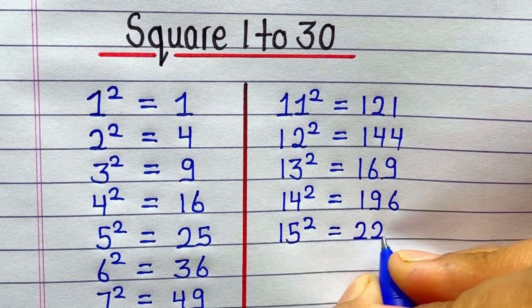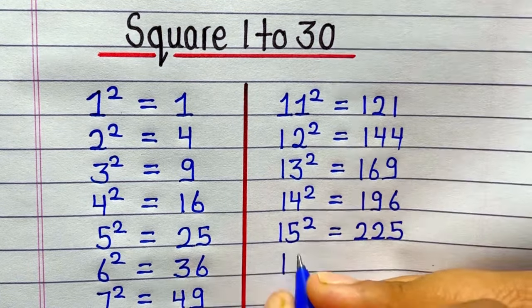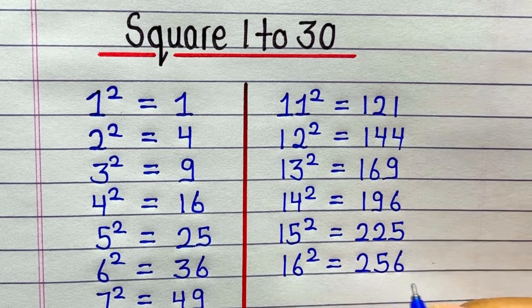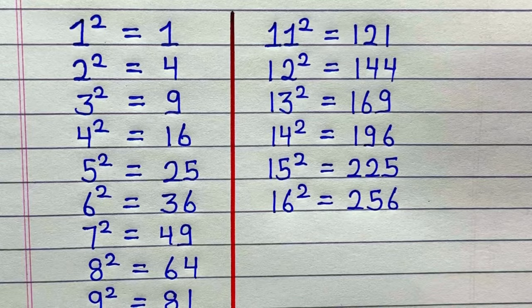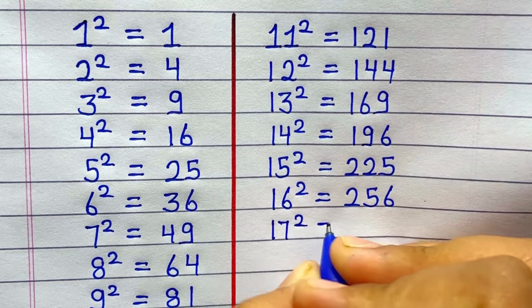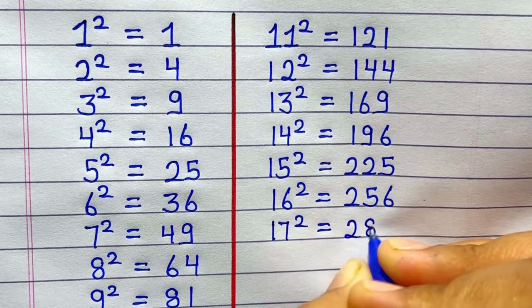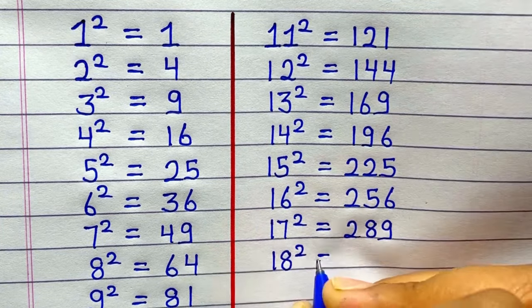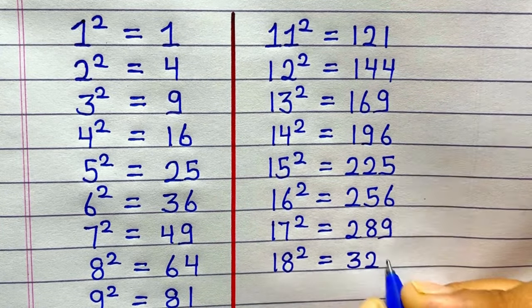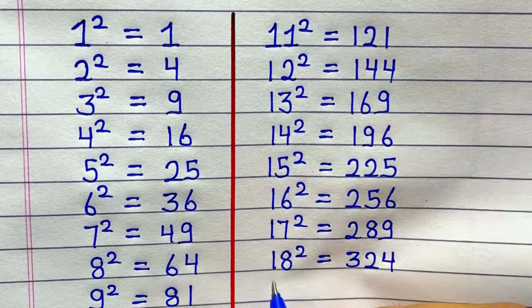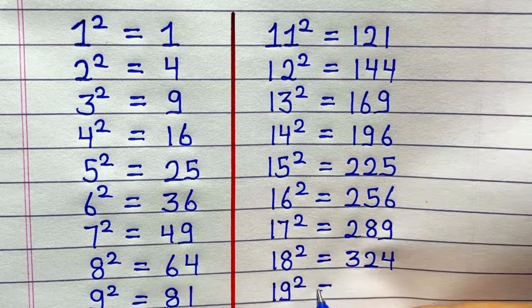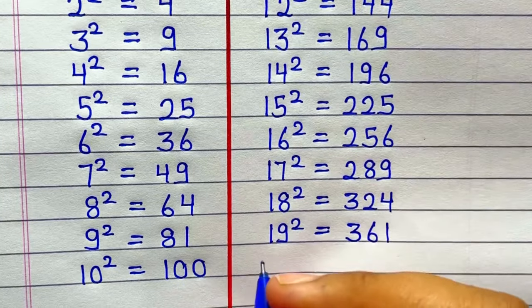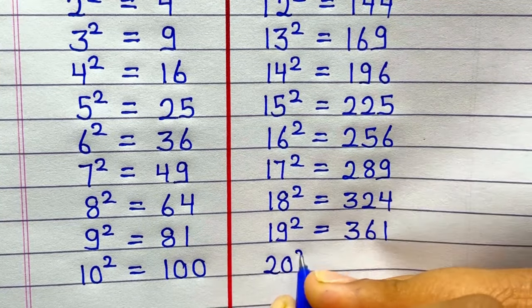15 ka square hai 225. 16 ka square hoga 256. 17 ka square hai 289. 18 ka square hai 324. 19 ka square hai 361. 20 ka square hoga 400.